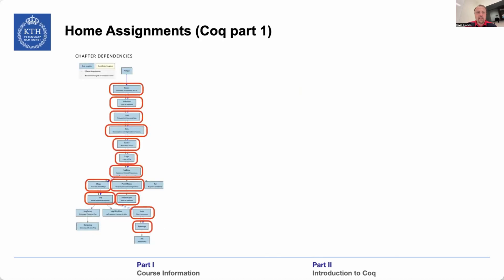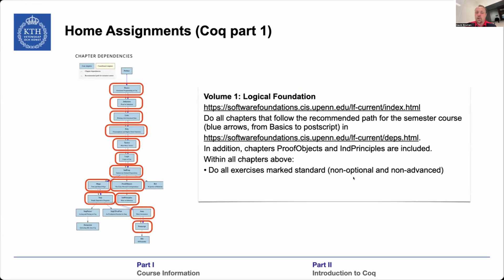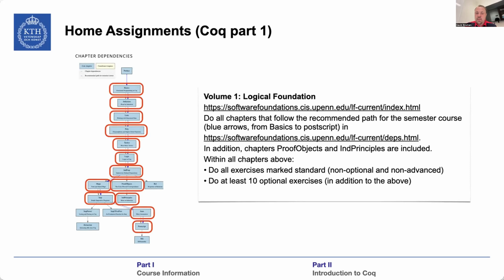For home assignments, we use a really nice online book by Benjamin Pierce. You write your proofs inline — the book and the proof script are the same, and you fill in the blanks. There are theorems and you write the proofs for them directly in the book, which you also submit for examination. For Volume 1, you will do all the standard exercises — all of them, non-optional and non-advanced. There are also optional exercises, of which you should do at least 10 of your own choosing, and advanced exercises of which you should do at least 4.